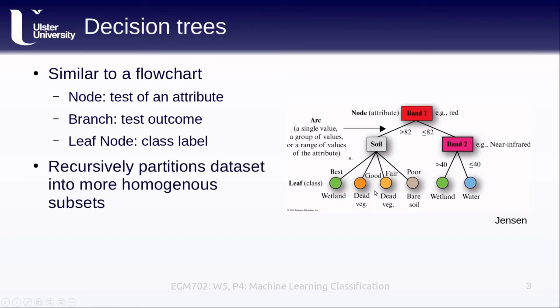Another way of thinking about this is that we are recursively partitioning our data set into more and more homogenous subsets of the data. We're taking the objects or pixel values as an input and returning classes as the output.